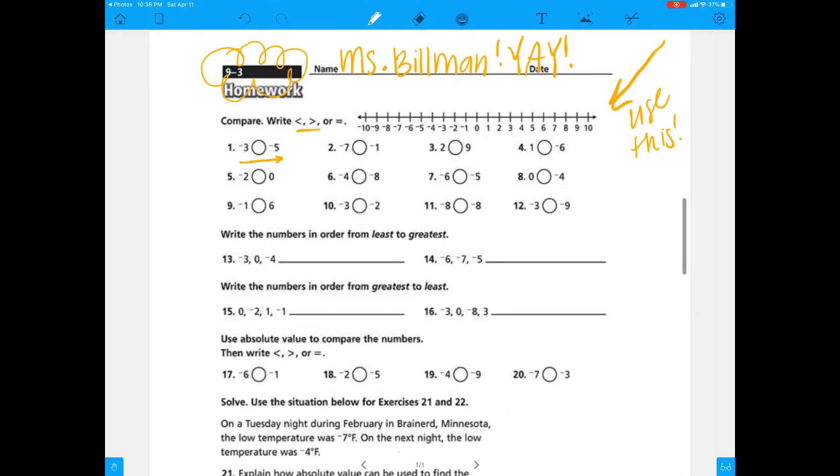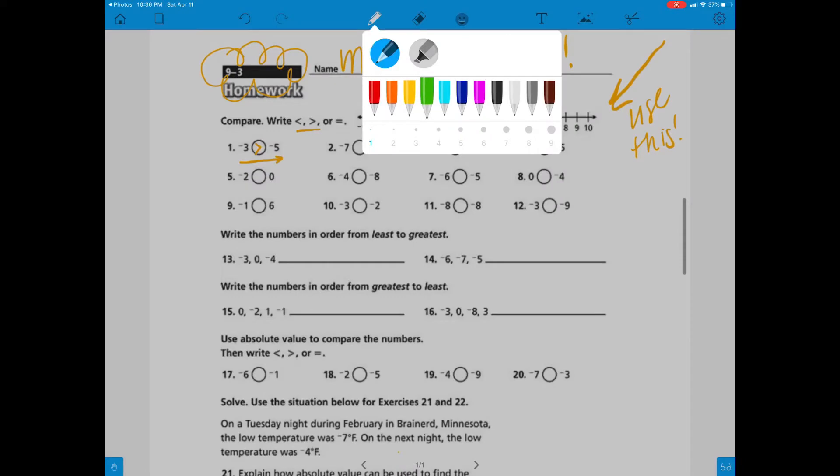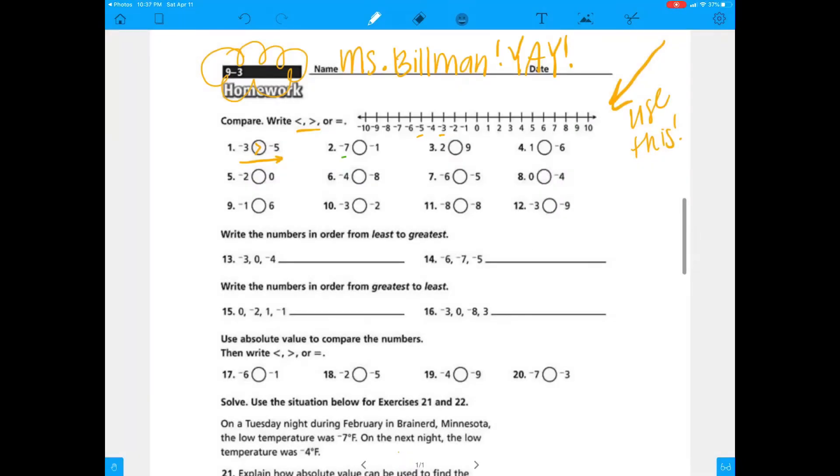Negative 3 versus negative 5. Negative 3 is actually greater than because it's closer to 0. The number that's closest to 0, especially on the left-hand side, that's going to show you the greater one. So negative 7 versus negative 1. Negative 7 is less than negative 1.